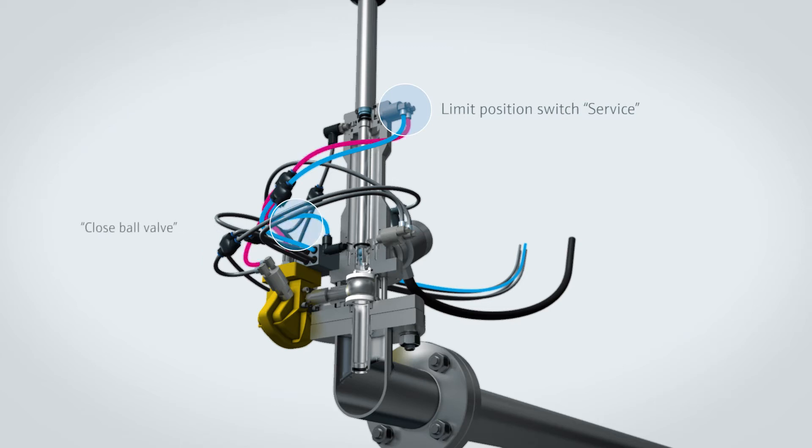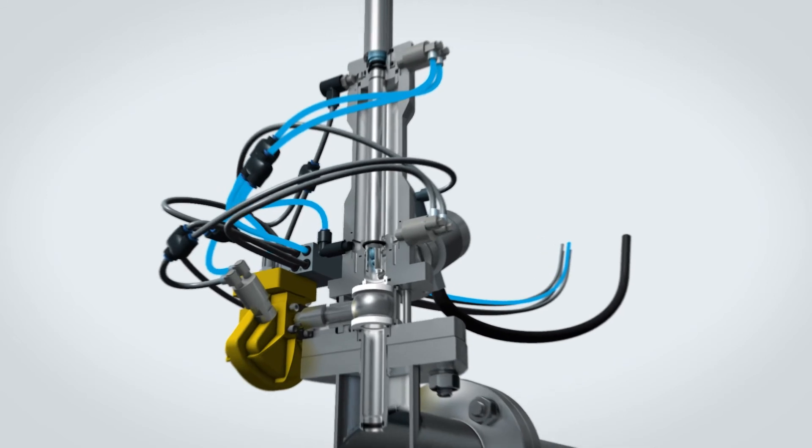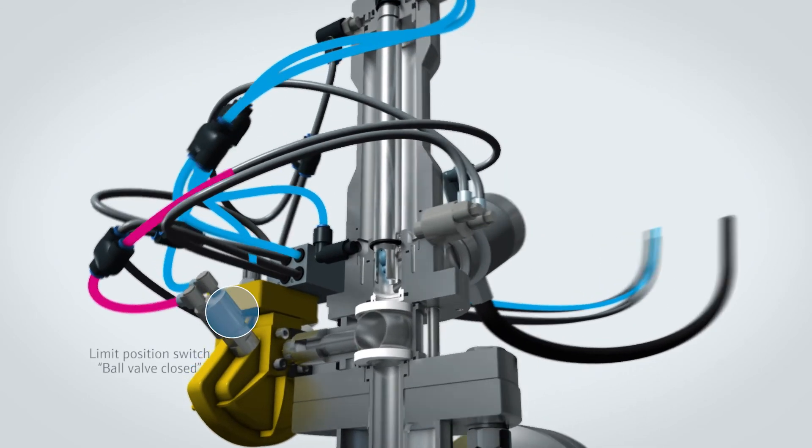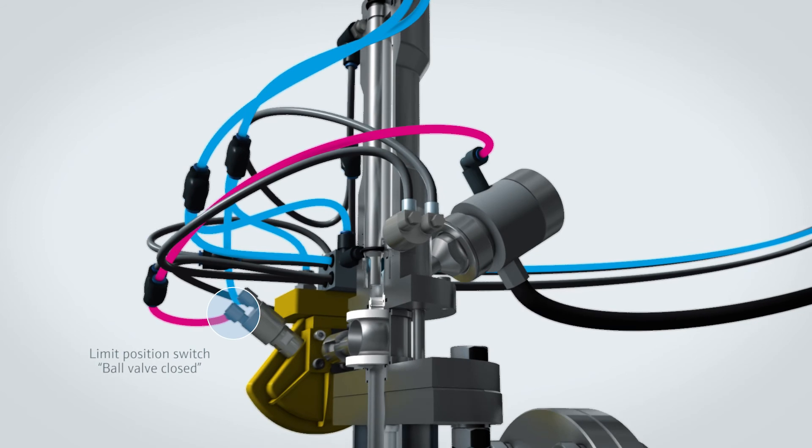This causes air pressure to be applied to the closed ball valve inlet and the ball valve closed pneumatic limit position switch. When the ball valve is completely closed, the ball valve closed pneumatic limit position switch conveys the compressed air onwards, causing the optionally installed automatic outlet safety seal to open.